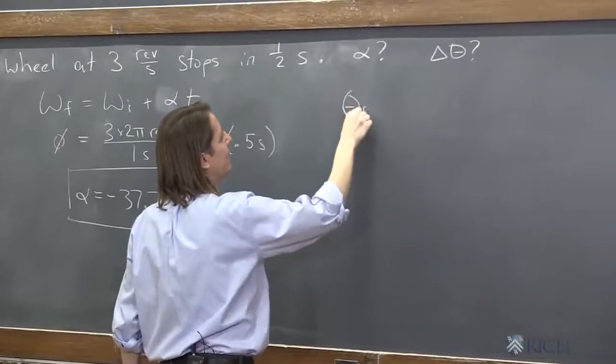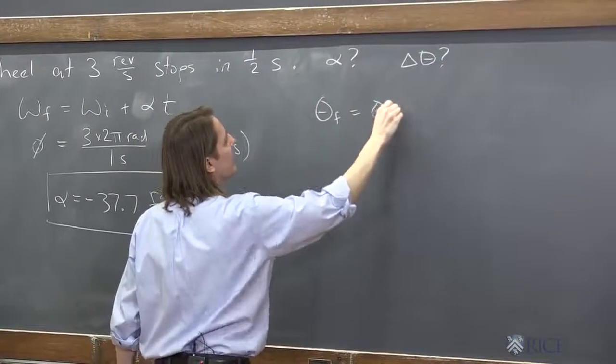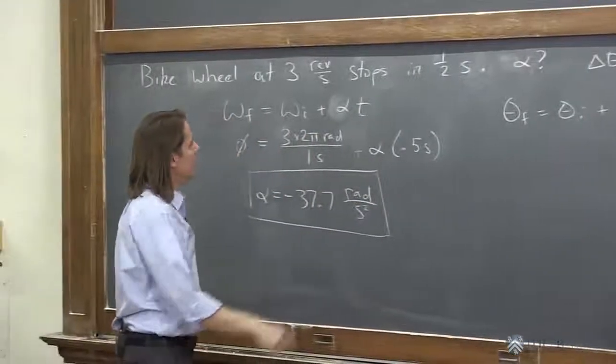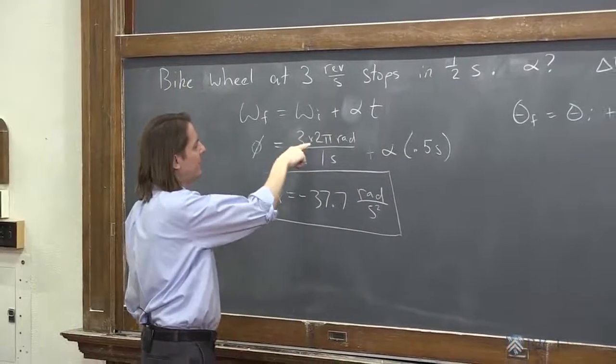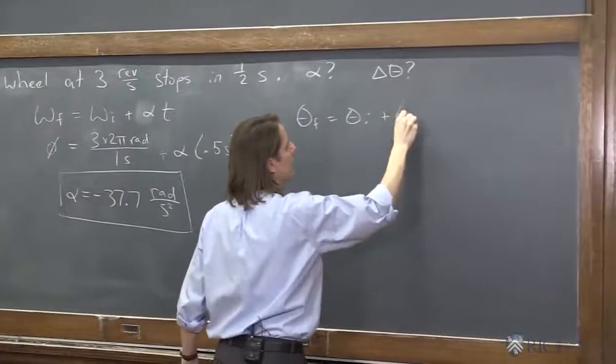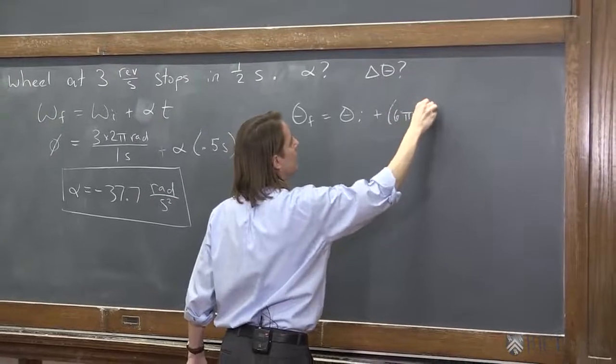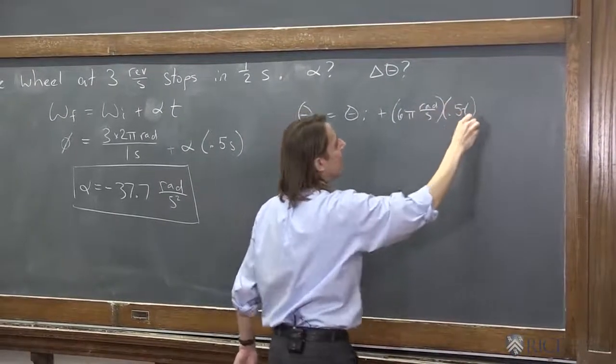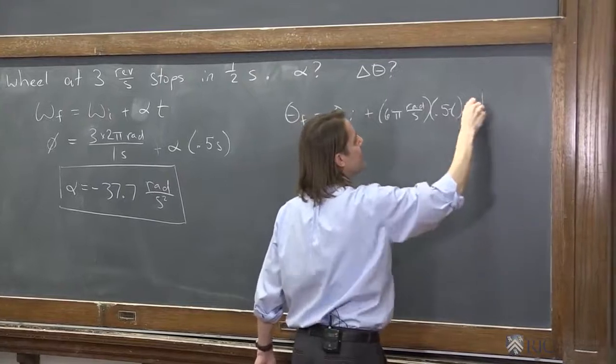theta final equals theta initial plus initial omega t, 3 times 2, well, 6π radians per second. We already calculated that. Times t, 0.5 seconds, plus one-half a t squared.